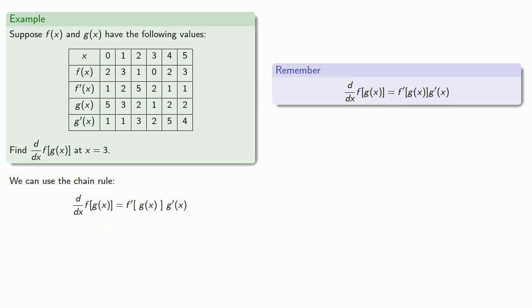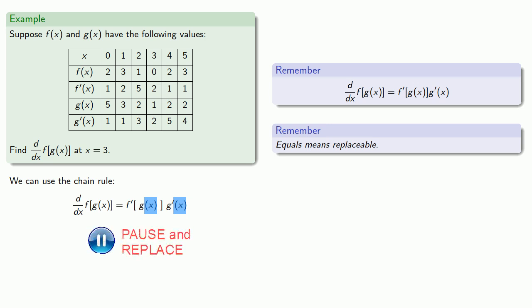Now we want to find the derivative at x equal to 3. So remember, equals means replaceable. Every place we see an x we'll replace it with a 3. Well that doesn't do us much good. We don't know what g of 3 is. If only there was some way we could determine the value of g of 3. Oh wait, it's right here in the table, g of 3 is equal to 1.